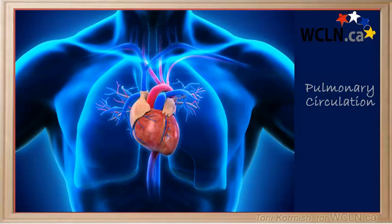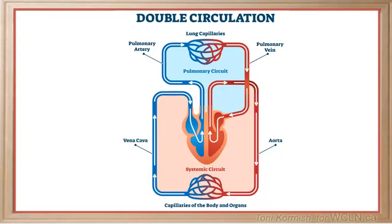For this unit, you will have to be able to identify the flow of blood through various different pathways. There are two paths that you will need to be able to describe: one is pulmonary circulation and the other is systemic circulation.